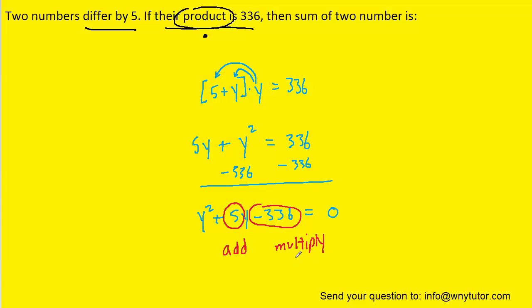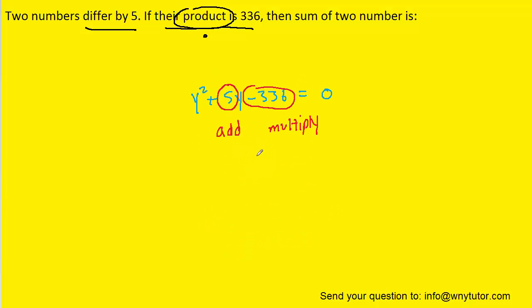So you might want to pause the video here and try to come up with two numbers that add to positive 5, but also multiply to make negative 336. And after thinking about that for a while, you should be able to determine that positive 21 and negative 16 are going to be the two numbers that work. Because when you add these together, you do indeed get positive 5, but when you multiply them together, you do indeed get negative 336.